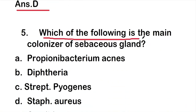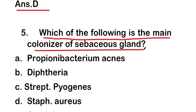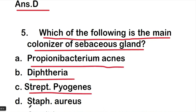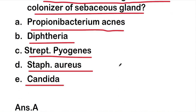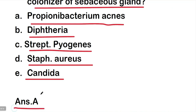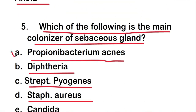Question 5: Which of the following is the main colonizer of the sebaceous gland? The options are Propionibacterium acnes, Diphtheria, Streptococcus pyogenes, Staphylococcus aureus, or Candida. The right answer is option A: Propionibacterium acnes. Propionibacterium acnes is the main colonizer of the sebaceous gland.